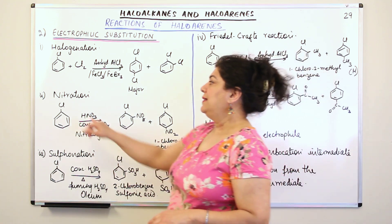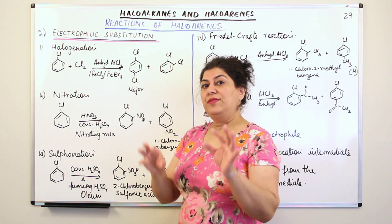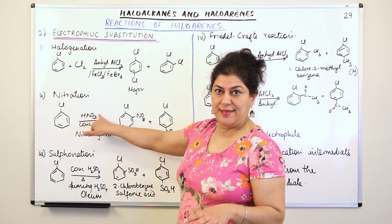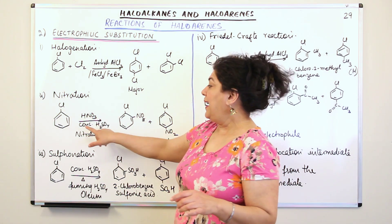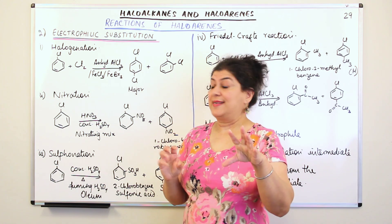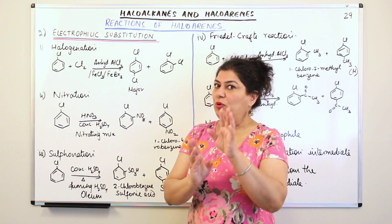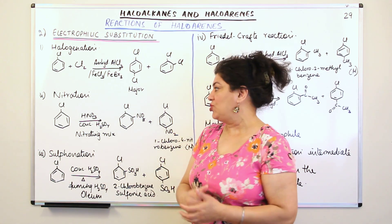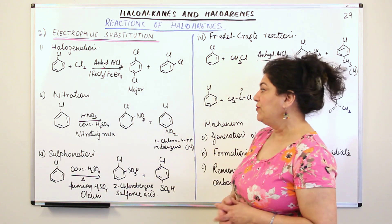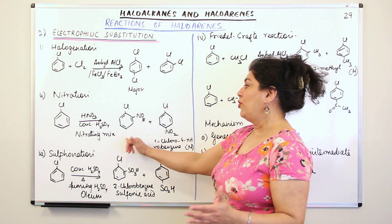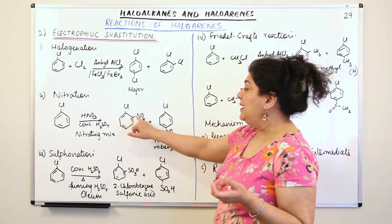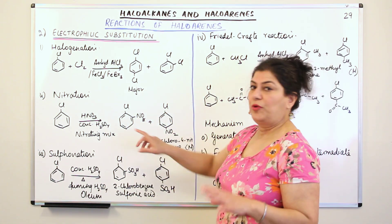The second type of reaction is nitration. You again have chlorobenzene, and nitration takes place in the presence of a nitrating mixture: HNO3 (nitric acid), which provides the NO2+, and concentrated H2SO4. Nitric acid itself is a very strong acid, and H2SO4 is the strongest acid, so when both are mixed together they form an extremely strong mixture known as the nitrating mixture. You again get a mixture of ortho- and para-substituted nitro products, with the para-product being the major product and the ortho-product the minor product.